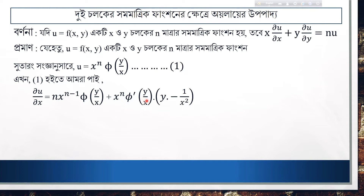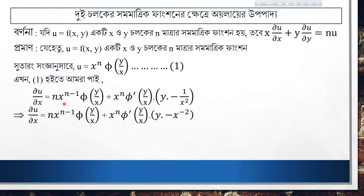So we have to compute x into x. We will write x into this expression. The partial derivative is equal to n times x to the power n minus 1, phi of y by x, minus y by x squared times x to the power n, phi dash of y by x. This is equal to n times x to the power n minus 2.